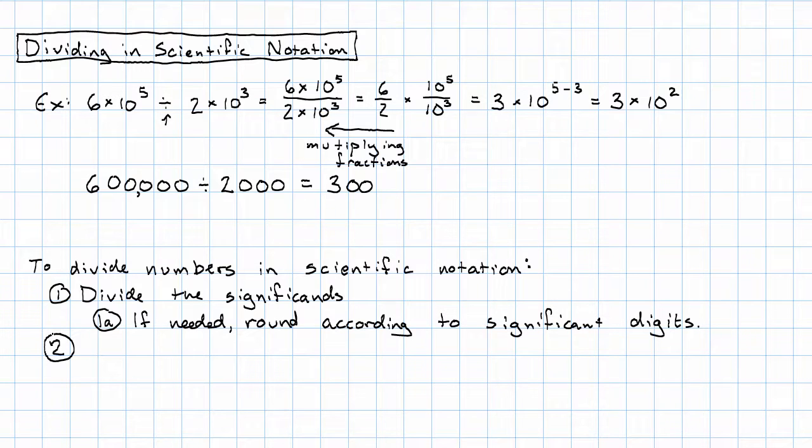To get our new magnitude, we'll just subtract the magnitudes. And then finally, if we need to, we'll fix the scientific notation. Let's see an example where we need to fix the scientific notation. And then we'll see an example where we really need to round.